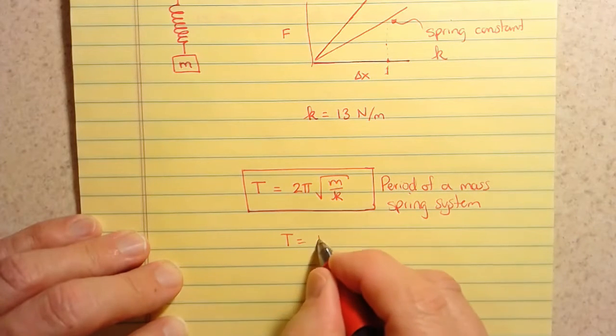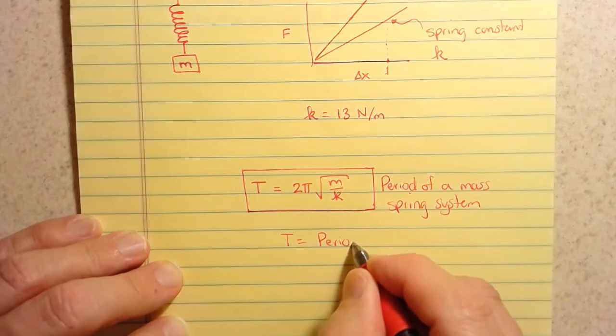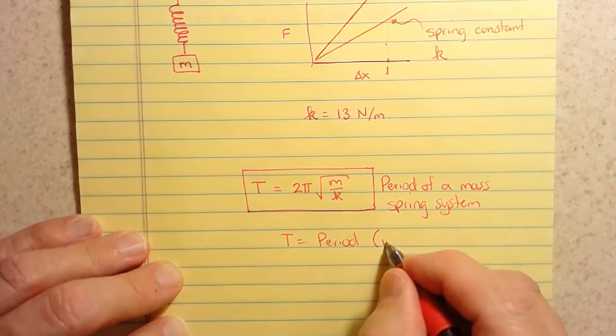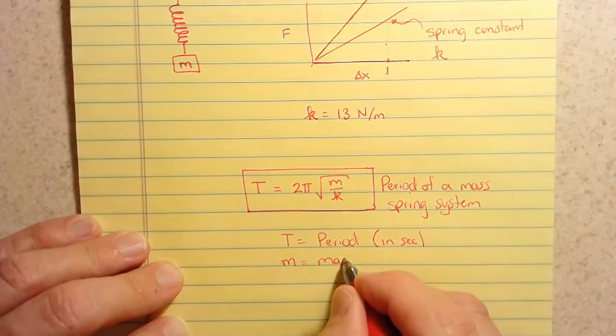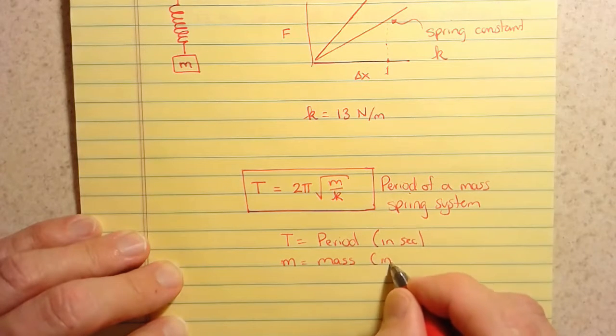So as before, T is the period, the time it takes to complete a cycle. We're going to measure that in seconds. M is the mass, the amount of matter we have. And again, that's always in kilograms.